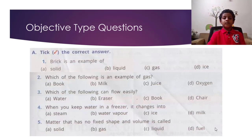Objective type questions. A. Tick the correct answer. First, brick is an example of solid. Which of the following is an example of gas? Oxygen. Which of the following can flow easily? Water. When you keep water in a freezer, it changes into ice. Matter has no fixed shape and volume, it's called gas.